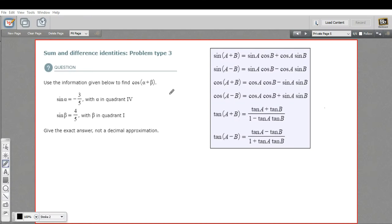Here, we have another type of problem involving the sum and difference identities. In this case, we're being asked to find this quantity of the cosine of angle alpha plus angle beta. And we've got values for the sine of alpha and the sine of beta that are ratios, that are fractions here.